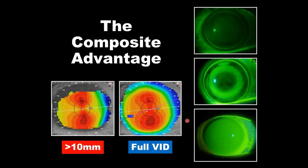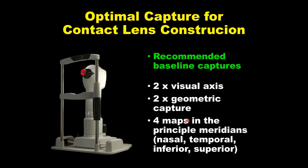MedMOT created a capture wizard for the composite capture, but I don't use the composite wizard. Now that I understand what MedMOT wants as a way to link the various fixations together, I do something different. If I'm trying to build a specialty contact lens and want a lot of accurate data on the eye, I take eight different captures on each eye — manually capturing these eight different captures. They are two captures on the visual axis, two on the geometric, and then four different fixations to give us a large view of the eye.